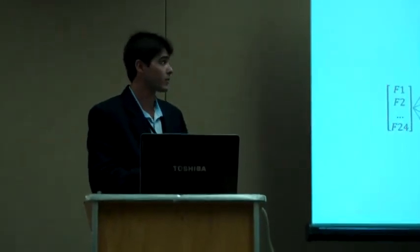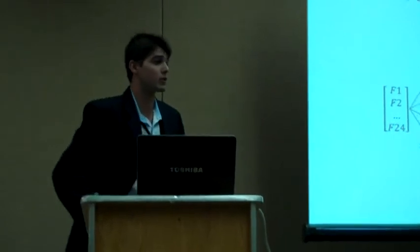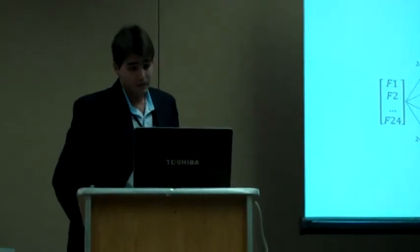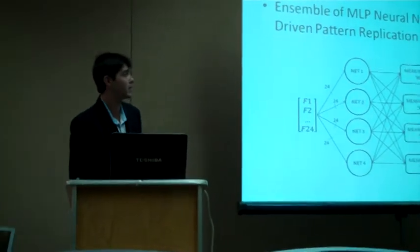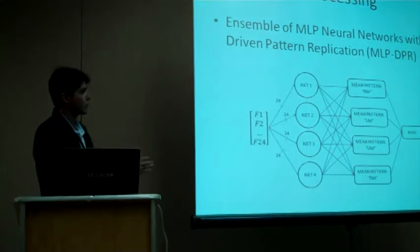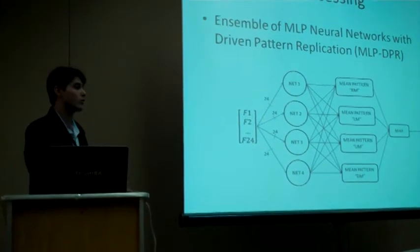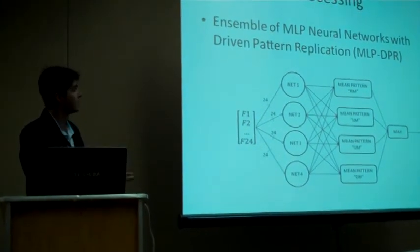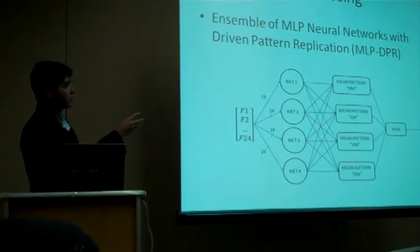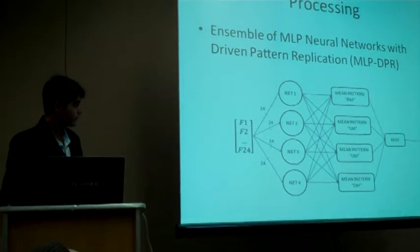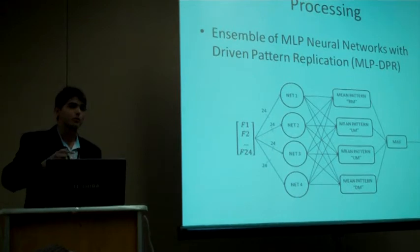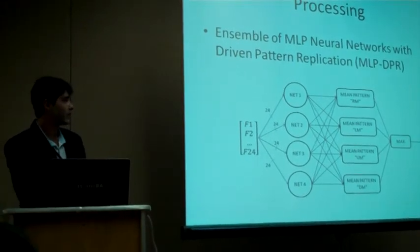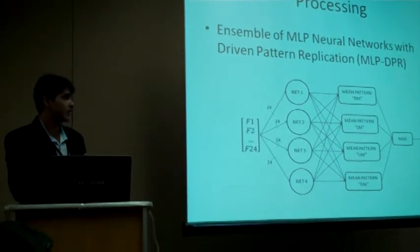To classify these mental tasks, three models, three classifiers based on neural networks were evaluated. The first one is an ensemble of multilayer perceptron neural networks with driven pattern replication. We have four neural networks, and the training protocol was modified, the training set actually was modified, so that each neural network classifies better one pattern. And the final classification is obtained combining the outputs from each member by their mean values and choosing the highest average output.